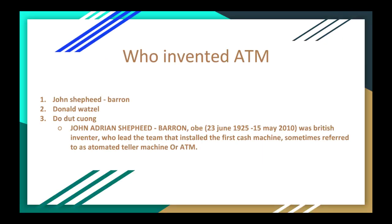Who invented ATM? First, John Schiffard Barron. Second, Donald Wetzel. Third, Do Jong. John Adrian Schiffard Barron was a British inventor who led the team that installed the first cash machine, sometimes referred to as Automated Teller Machine or ATM.